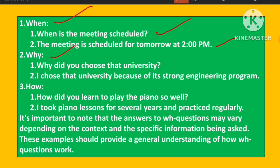Next: WHY. Question — Why did you choose that university? Answer — I chose that university because of its strong engineering program. Next: HOW. Question — How did you learn to play the piano so well? Answer — I took piano lessons for several years and practiced regularly.